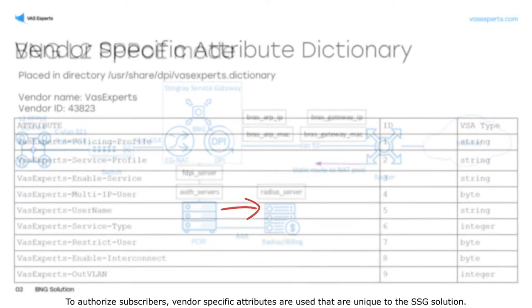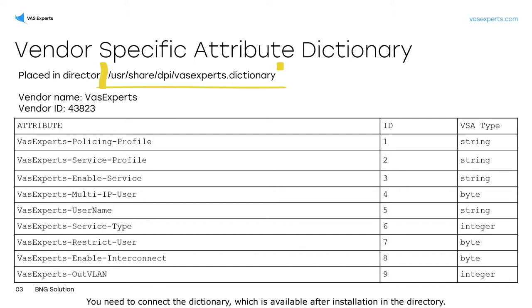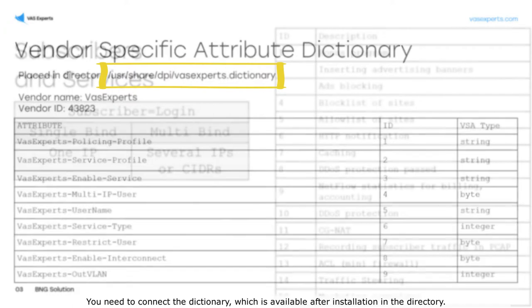To authorize subscribers, vendor-specific attributes are used that are unique to the SSG solution. You need to connect the dictionary, which is available after installation in the directory.